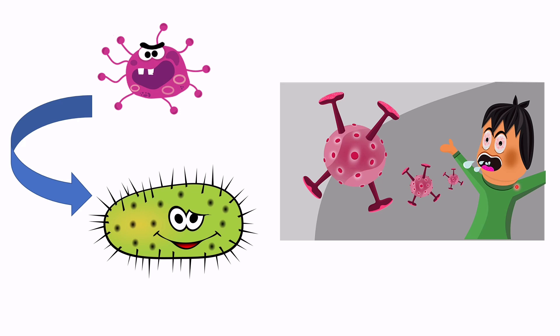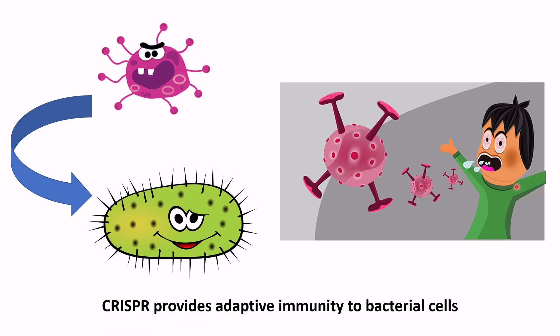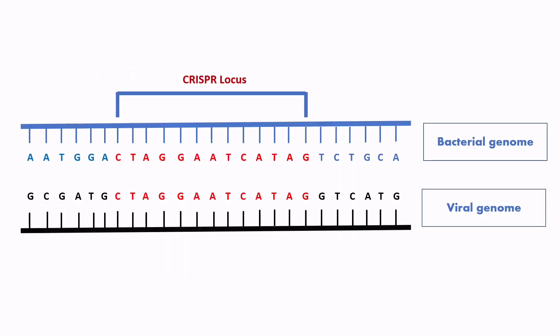This is very much similar to our antibody response during a second infection. Therefore, it can be said that CRISPR provides adaptive immunity to bacterial cells. But how do bacteria possess CRISPR genes?